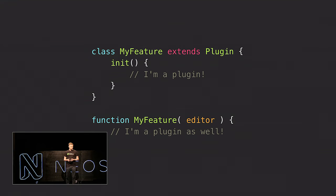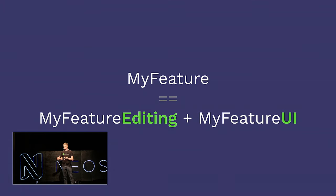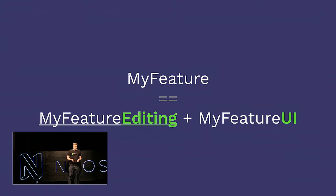What is a plugin in CKEditor 5? It's either a simple class that extends the base plugin class, or even a simpler constructor function which gets the editor as its parameter. In addition to plugins being implemented in a really granular way, they are also split into parts — there's the UI part and the editing part. The UI part implements things like buttons, drop-downs, balloons, and so on, and the editing part implements everything else. Thanks to that, you can drop the UI part and implement your own UI for CKEditor 5, and that's actually what Neos did because it ships with its own React-based UI. In this presentation, we'll focus only on the editing part.